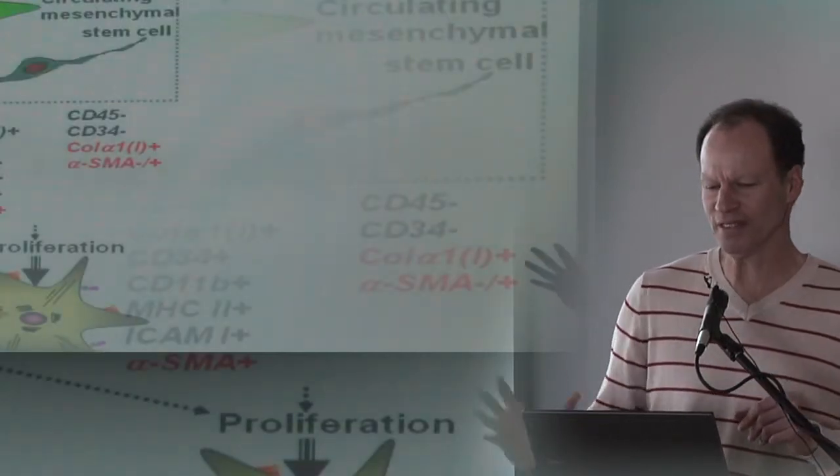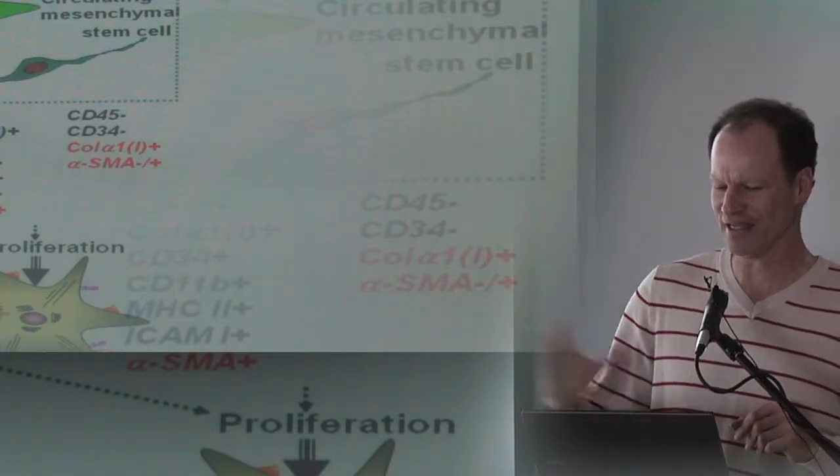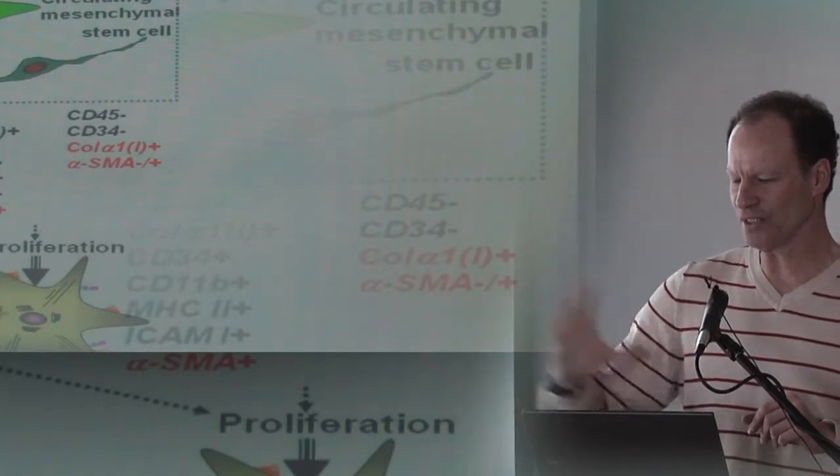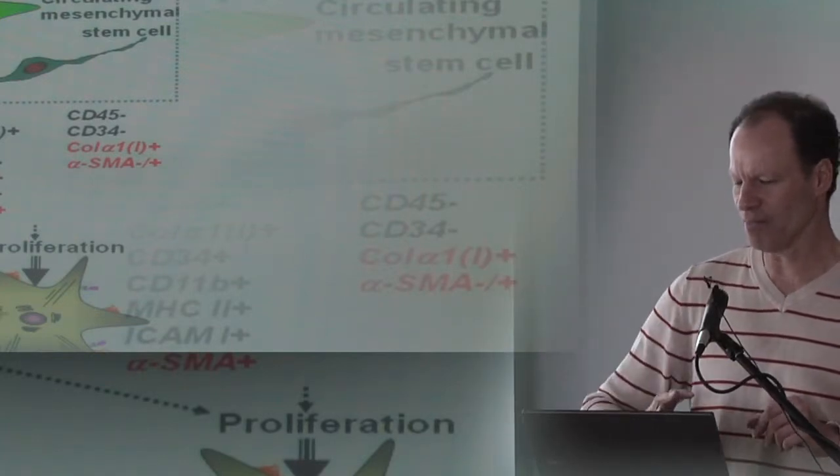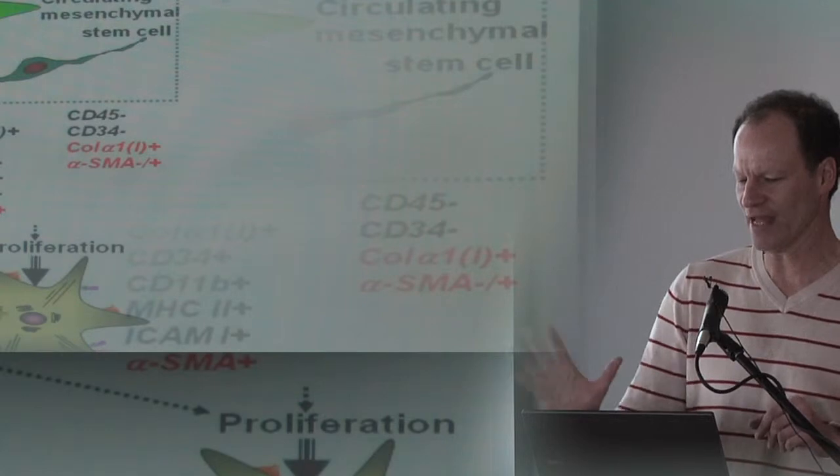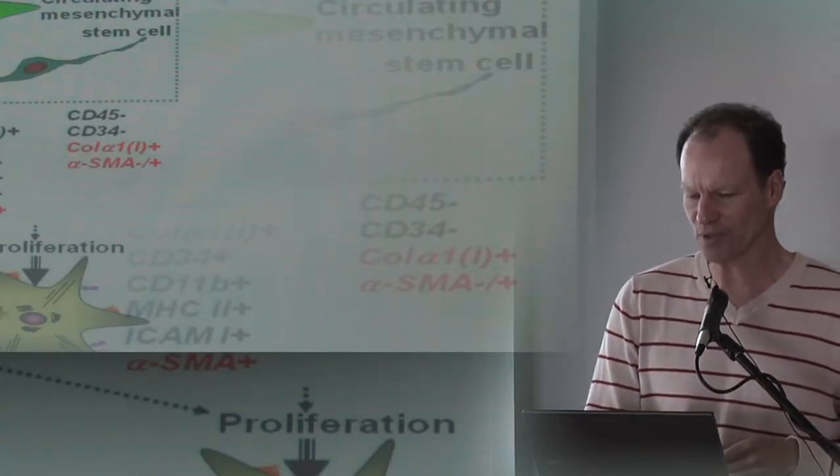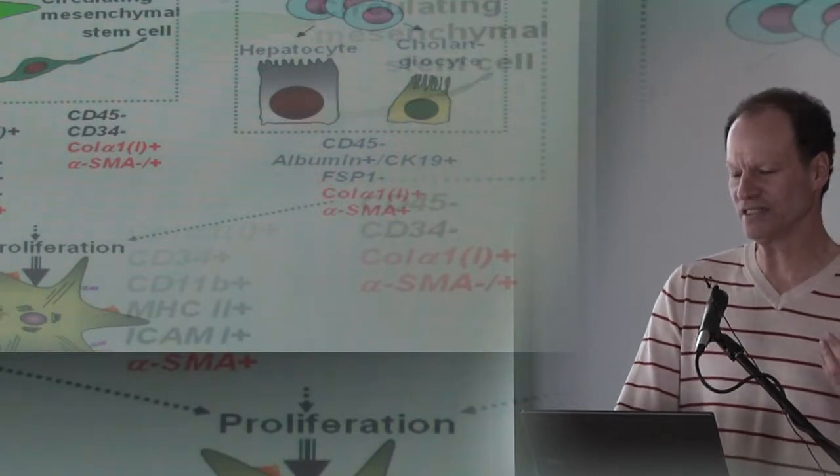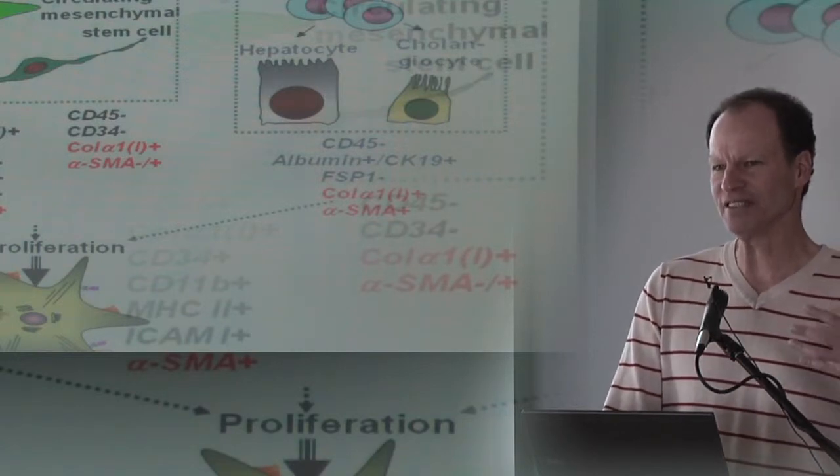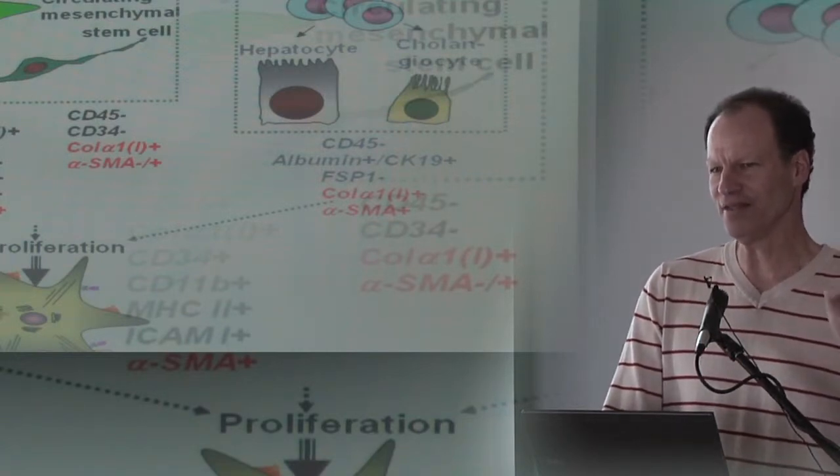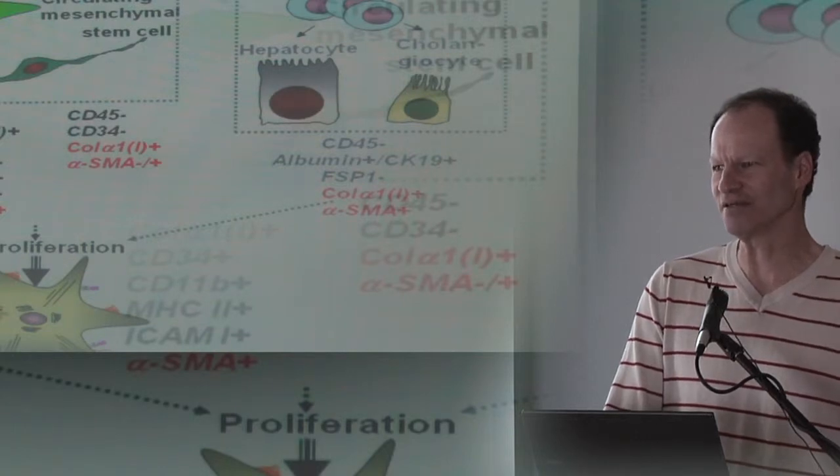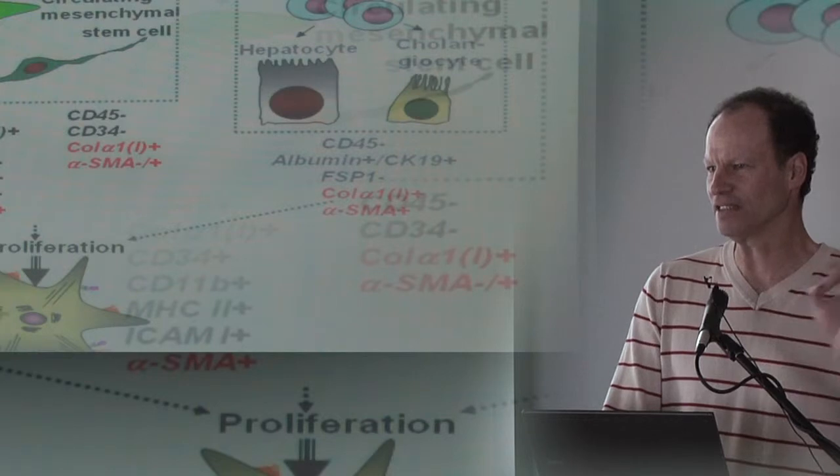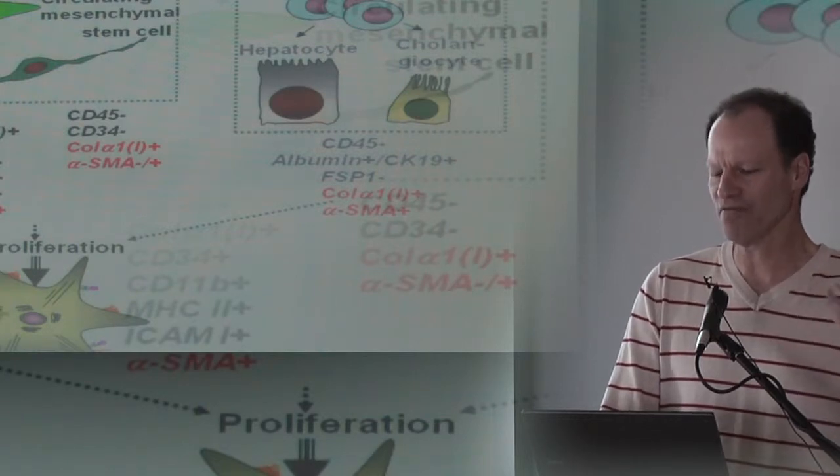Another possibility is that the bone marrow can be the source of myofibroblasts recruited to the injured organ and they become myofibroblasts in situ. And finally, there's been a flurry of interest in this concept of epithelial mesenchymal transition. The epithelial cells themselves, in the liver the cholangiocytes and the hepatocytes, could potentially become myofibroblasts.